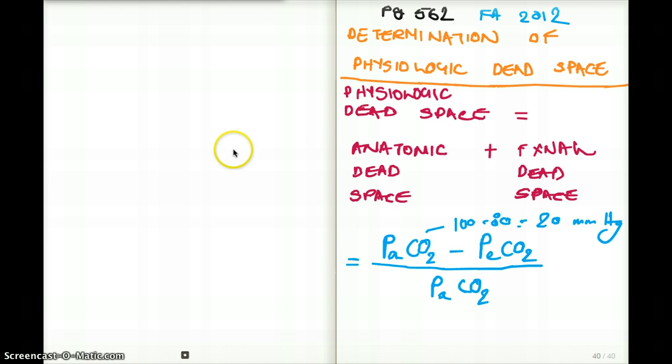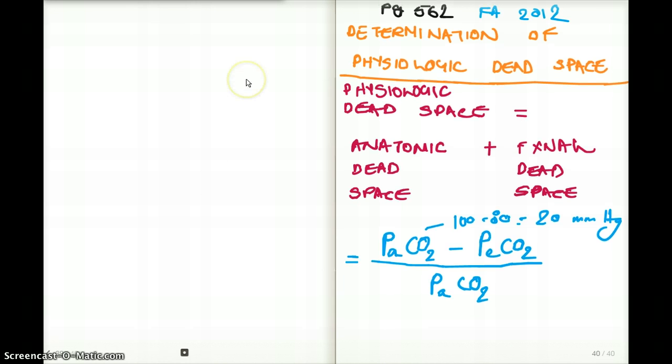Now let's see how we can use the dead space pre-measured into other equations. Let's talk about ventilation. There is really two types of ventilation. There is the minute ventilation, and then there is the alveolar ventilation.